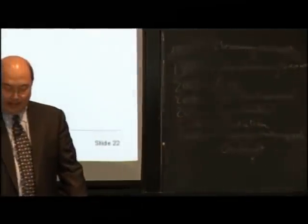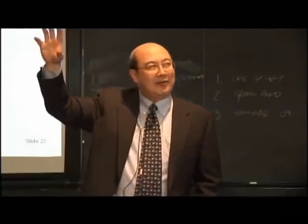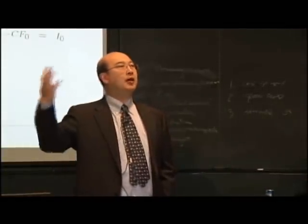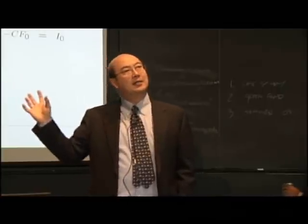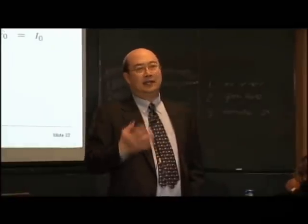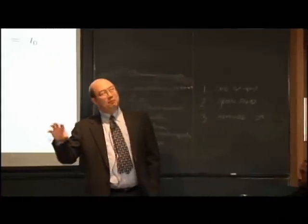Payback is a relatively short-sighted approach. It doesn't take into account scale — how much money you're going to make — and it doesn't take into account risk other than the risk of not getting paid back. We can try to fix this by using discounted payback, so at least the cash flows are in the same units. But discounted payback still ignores cash flows after the payback period. So you can have a project that has a negative NPV but still appears acceptable because it pays back in a short time. That's a mistake.